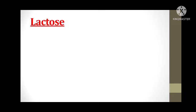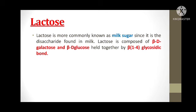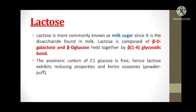The next example is lactose, commonly known as milk sugar. Lactose mainly consists of beta-D galactose and beta-D glucose, held together by a beta-1,4 glycosidic bond. There is a free aldehyde group at C1 of glucose, so lactose is a reducing sugar. It exhibits reducing property and forms osazones.